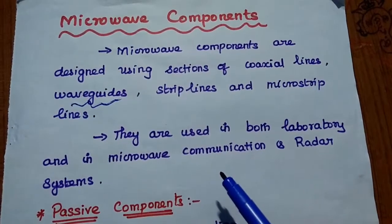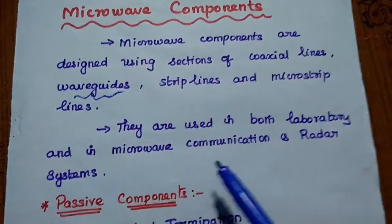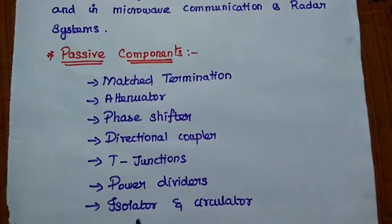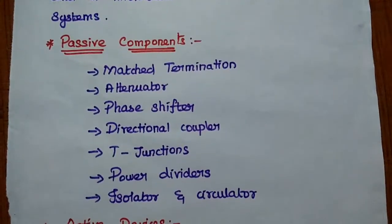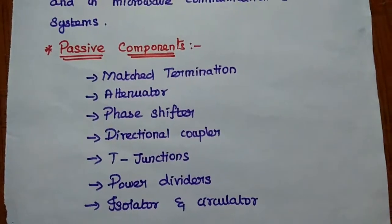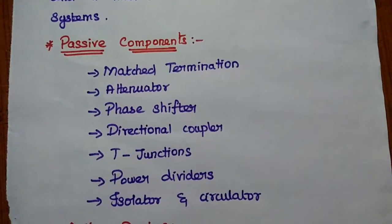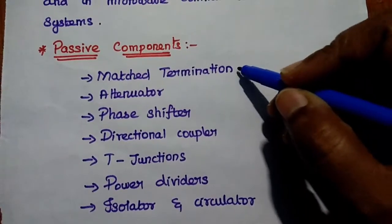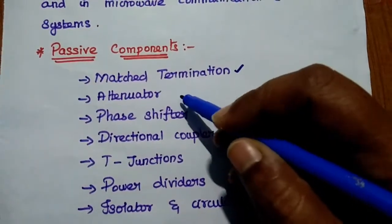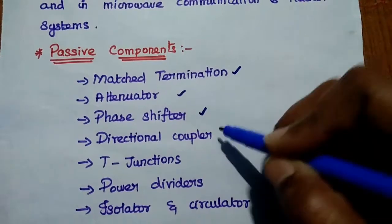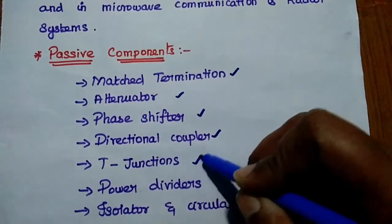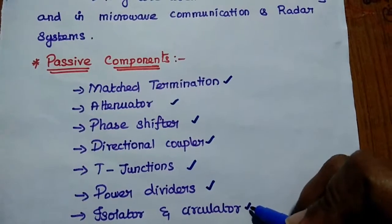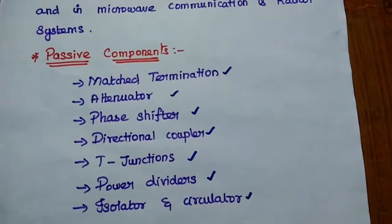Like normal electronic components, microwave components also have two parts: passive components and active components. Examples of passive components include matched terminator, attenuator, phase shifter, directional coupler, T-junctions, power dividers, isolator, circulator, and many more.